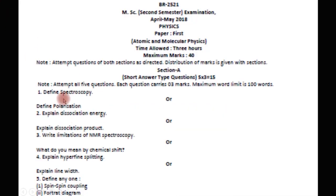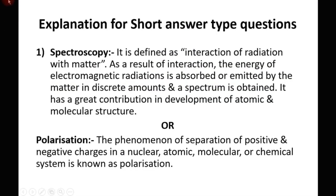The first question is: define spectroscopy. Spectroscopy is the branch of physics which deals with the interaction of radiation with matter. As a result of this interaction, the energy of electromagnetic radiation either gets emitted or absorbed by matter in discrete amounts — integral multiples of photons hν. As a consequence of this interaction, we obtain a spectrum. Any spectroscopic technique plays an important role in atomic and molecular physics because it completely describes the structure of atoms and molecules.